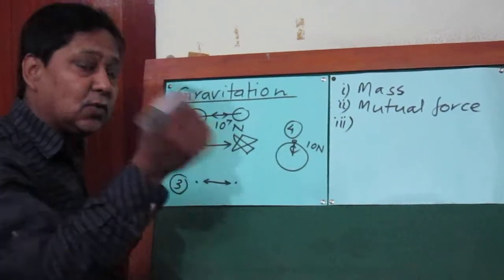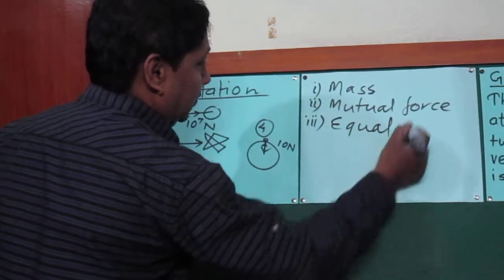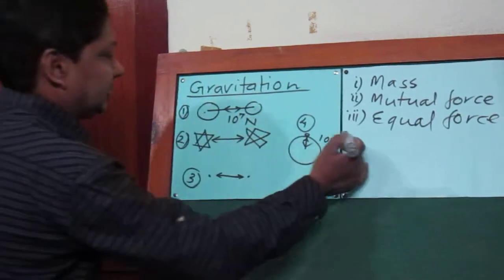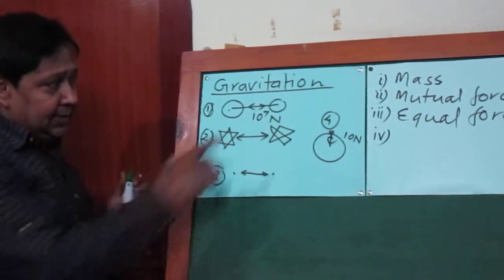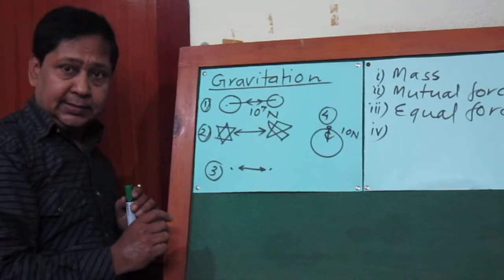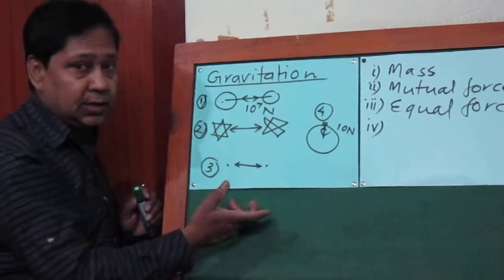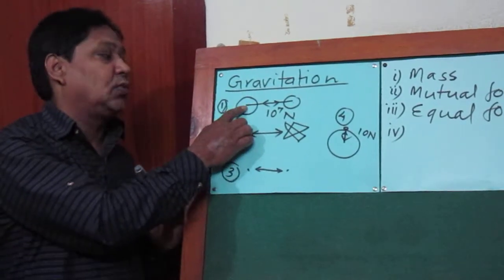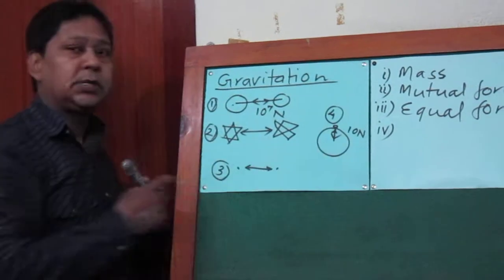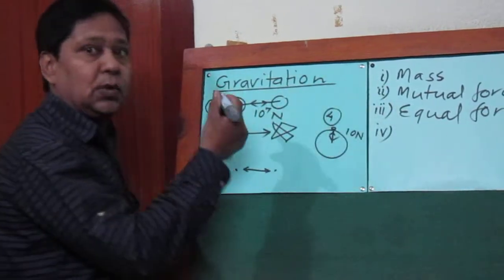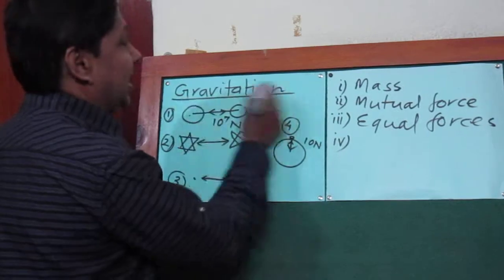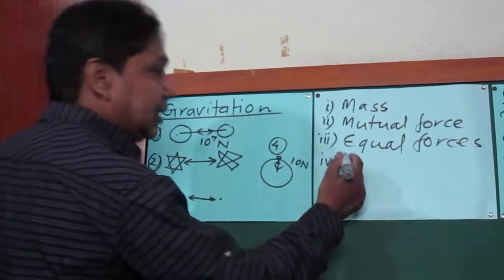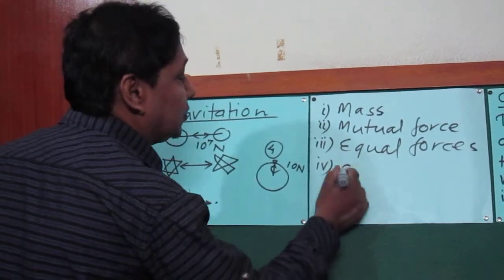Now the fourth characteristic: these two forces are equal, they are mutual, and they act in opposite directions. In what direction does the first one attract the second? In the opposite direction, the second one attracts the first. That's why the gravitational forces between two heavenly bodies, or any two bodies of this universe, are equal and opposite in direction.